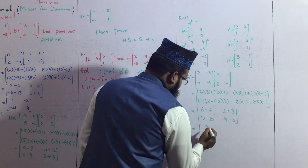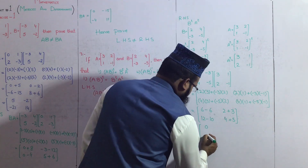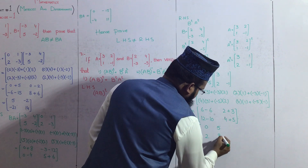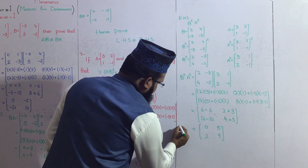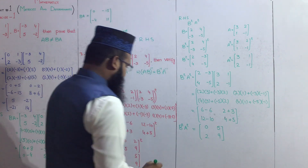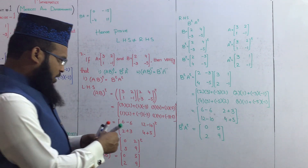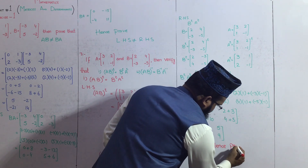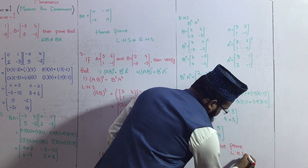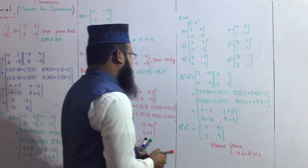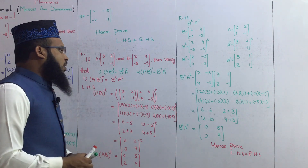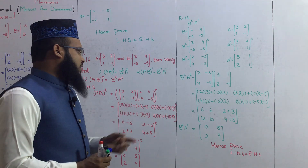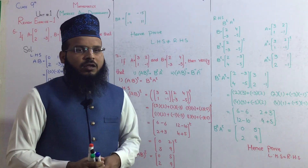B transpose times A transpose: [[0, 2], [5, 9]] — same result as LHS. Hence proved, left hand side is equal to right hand side. Ab isi question ka part number 2 humne exercise 1.6 ke question number 6 jo hai wo solve kiya hai. To aao main ummid karta hun ki aapko us exercise ki achhe se samajh lagi hogi. Apna khayal rakhega, take care, Allah Hafiz.